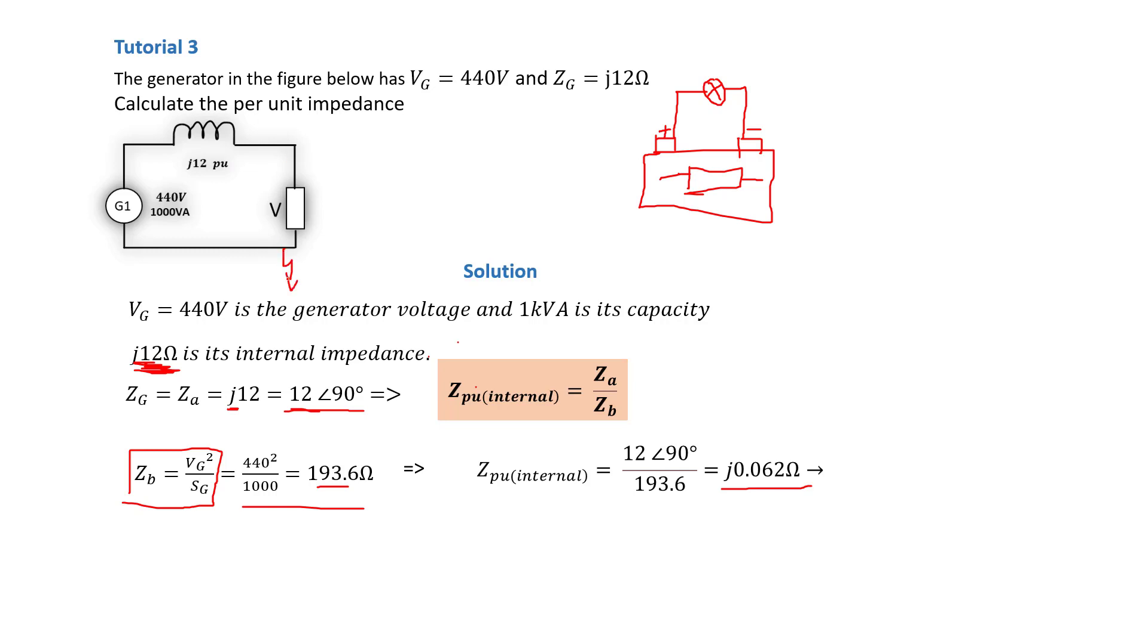In case we have a short here, you'll know how much current will flow based on this per unit because you can use the per unit formula to calculate the current, which will be 1 over Z_per unit total. So in this case, 0.062 is the total per unit from this generator here. So we know that the generator is purely inductive.